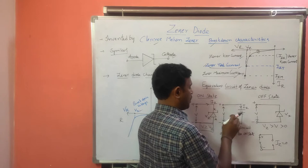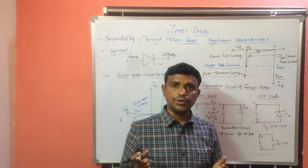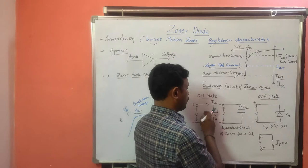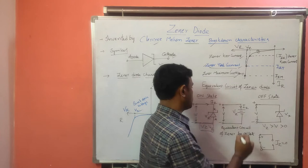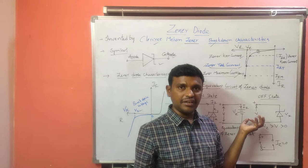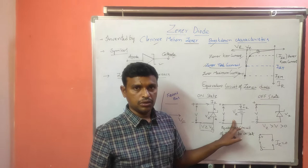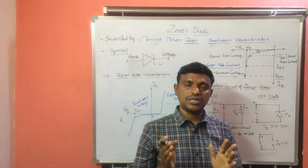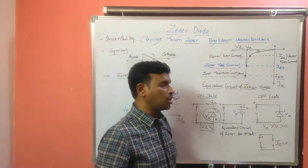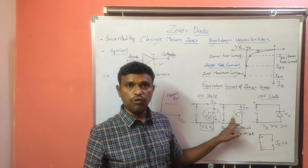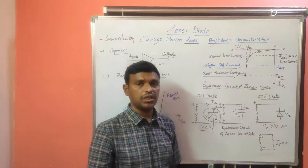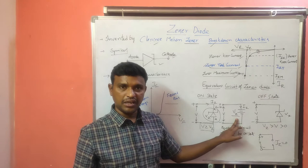Similar to what we have seen for a PN junction diode equivalent circuit, here we have the equivalent circuit for the GINA diode. When the GINA diode is in ON condition, there will be a constant voltage maintained across the GINA diode, that is VZ, and more current will flow. So in the ON state equivalent circuit, we replace this GINA diode with a battery of voltage VZ.